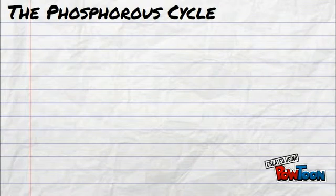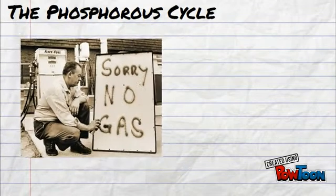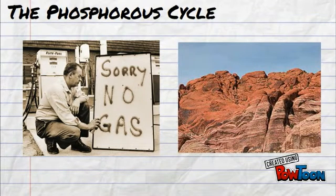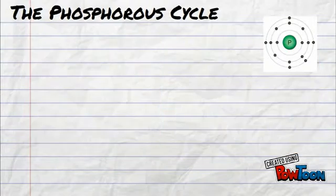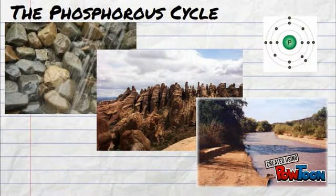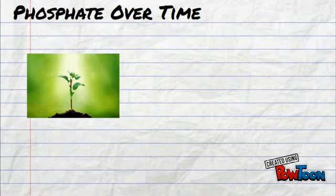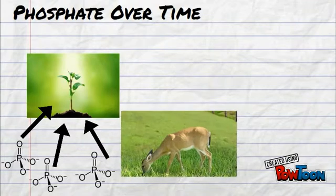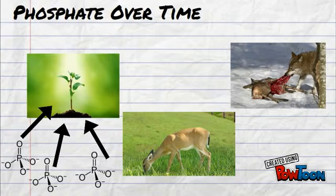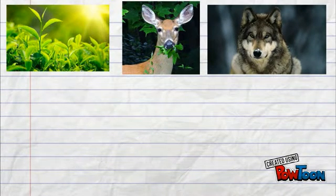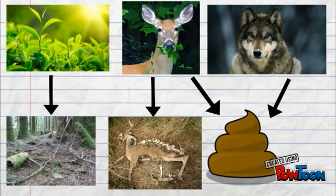Unlike many other cycles in biogeochemistry, the phosphorus cycle does not have a gaseous phase. The largest reservoir of phosphorus on earth is located in sedimentary rocks, which is where the cycle begins. When it rains, the rocks are weathered, which removes phosphate from the rocks and distributes it throughout soil and water. Plants take up some of those phosphate ions from the soil, and that phosphate gets transferred to animals when herbivores eat those plants and when carnivores eat herbivores. The phosphate assimilated into plants and animals will eventually reenter the cycle in the soil through defecation and decomposition after plant and animal death.